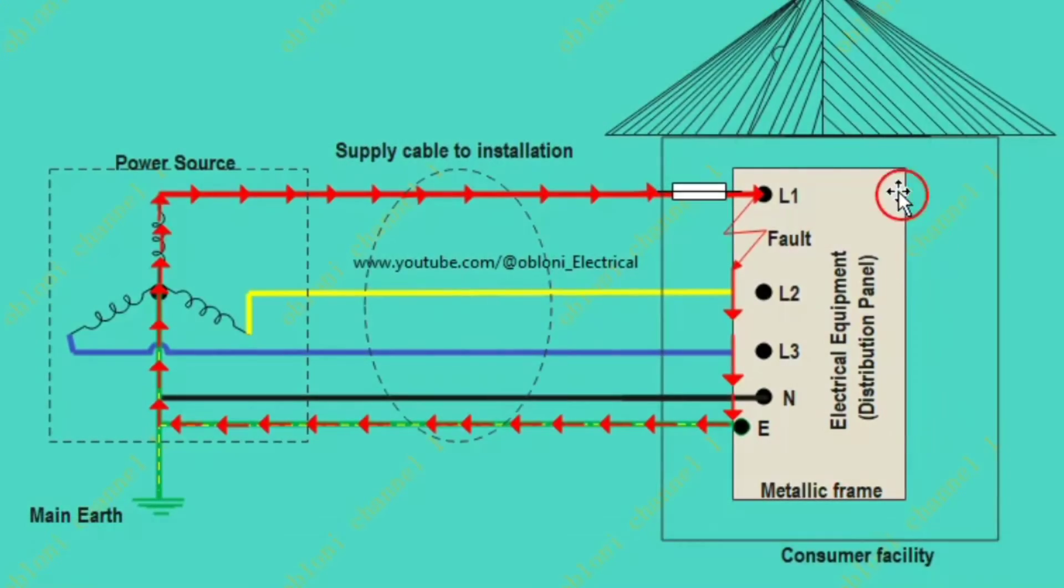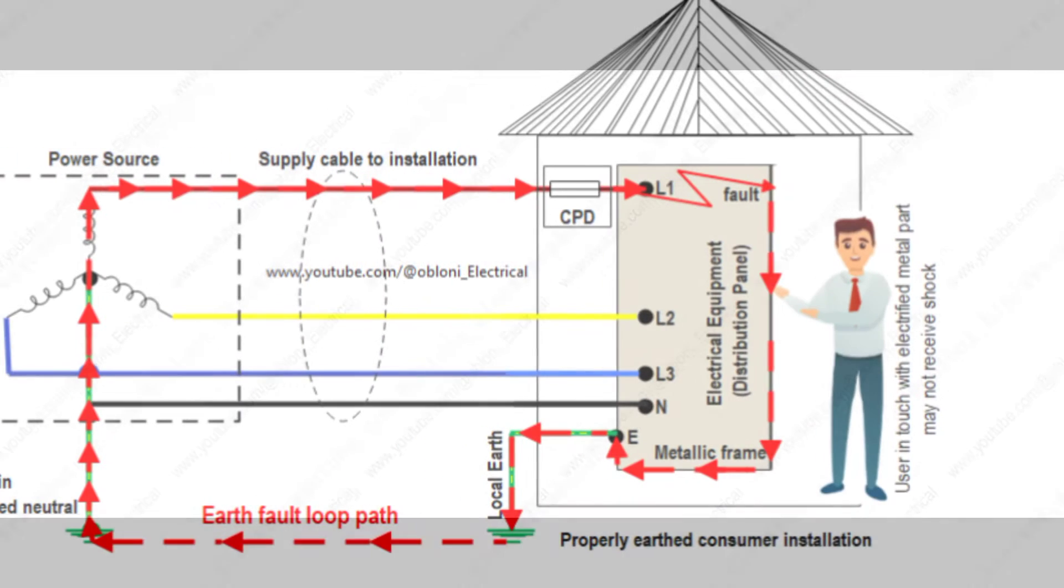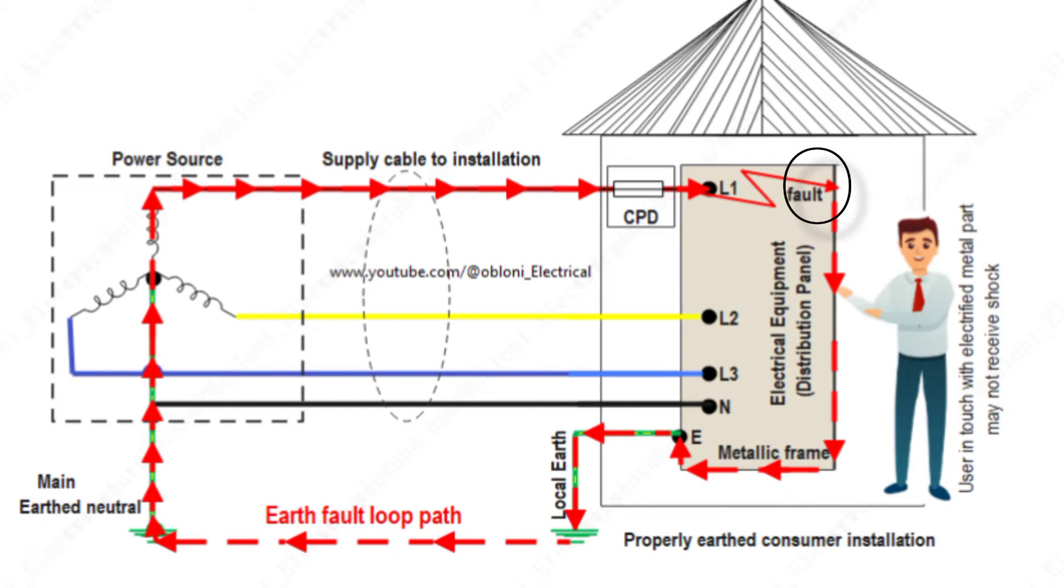In this episode I want us to carefully look at what actually happens when there is a direct short between a live conductor and a metal part of the wiring, or in simple terms when there is a direct contact between live and earth, what actually happens in terms of circuit breakers tripping or fuses breaking.